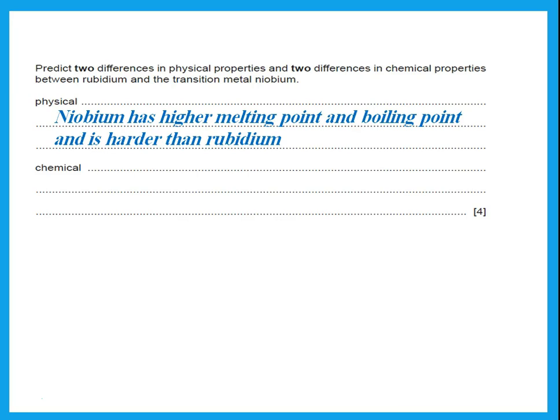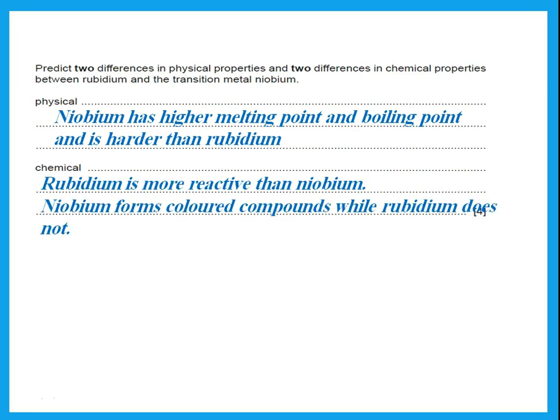So Niobium has higher melting point and boiling point, that's one mark, and it is harder, and if you said it has higher density, it's also correct. Now chemical properties, when we talk about chemical properties, we can say, for example, that rubidium is more reactive than Niobium. Remember we said group 1 is more reactive than group 2, more reactive than group 3, more reactive than transition. Or you could talk about Niobium. So Niobium forms colored compounds, while rubidium does not. Or Niobium can act as catalyst, while rubidium will not. Or Niobium has more than one valency, while rubidium does not.